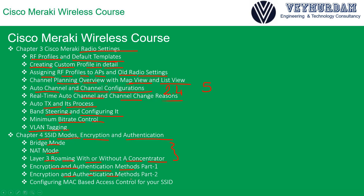Encryption and authentication methods will be discussed and configured on the Meraki dashboard one by one. When you change one setting you will encounter different options, so you will understand what options come with each mode, each encryption, and each authentication method. We will also configure MAC-based access control for your SSID — why you need it and how to do it.